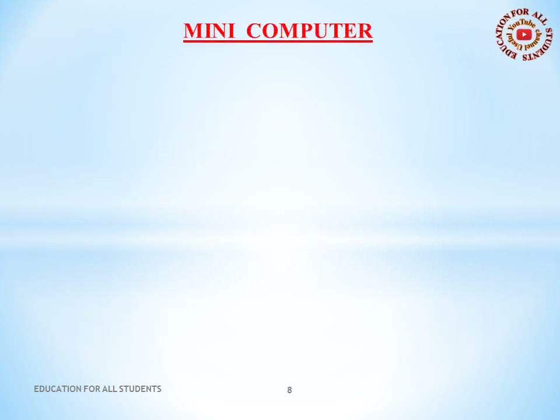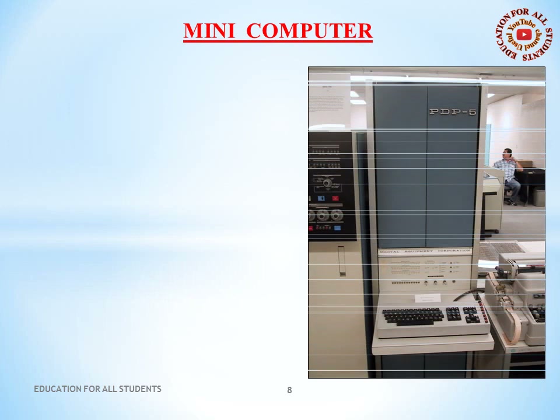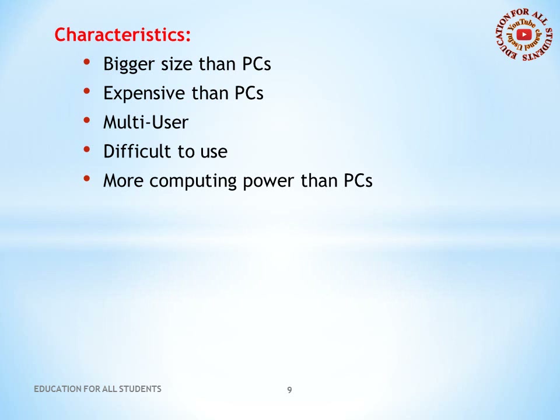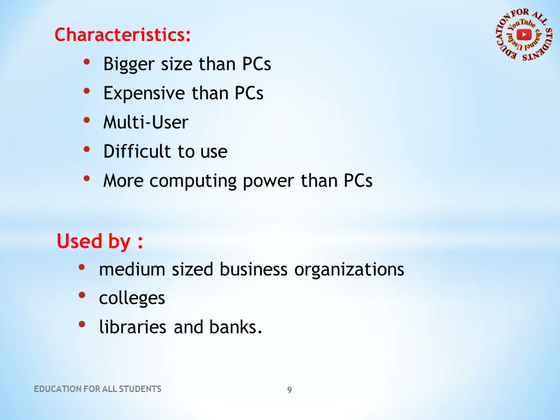The next title is minicomputer. A medium-sized computer, also called a mini — for example, IBM 36, HP 9000, etc. Computing power lies between microcomputers and mainframe computers. Characteristics: bigger in size than PCs, more expensive than PCs, multi-user, difficult to use, more computing power than PCs. Used by medium-sized business organizations, colleges, libraries, and banks.